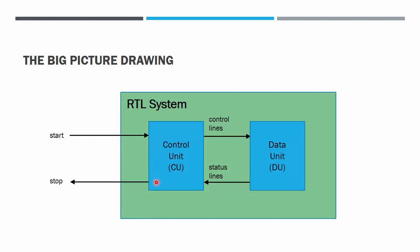And the other one that is coming from the RTL system going out is the stop signal. It also comes from Control Unit. These are the two signals that the outside user will be using to control the entire RTL system.